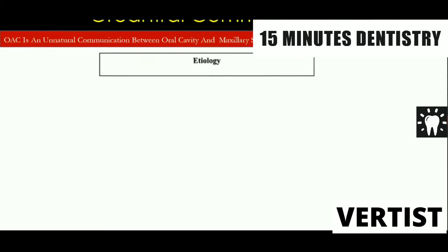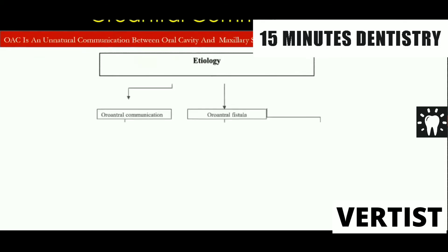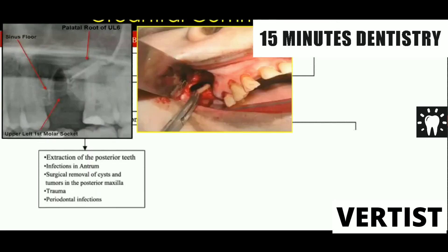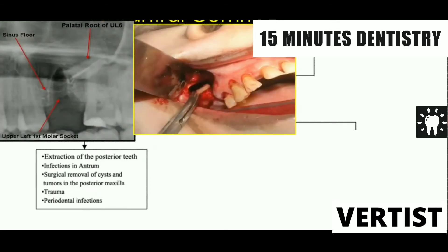If it is asked in an exam, it's an unnatural communication. What are the causes of oro-antral communication? The most important cause in day-to-day clinical practice is extraction of posterior teeth — it could be premolar or molar — followed by infections of the maxillary sinus, surgical removal of cysts and tumors of the posterior maxilla, trauma, and periodontal infection.